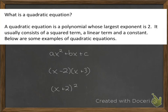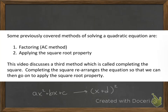Below are some examples of quadratic equations. Notice that this is a quadratic equation in factored form, and this is a quadratic equation also in factored form. However, you'd have to expand it. You could write it as x plus 2 times the quantity x plus 2, and then multiply it from there. Some previously covered methods of solving quadratic equations are factoring using the AC method and applying the square root property. This video discusses a third method, which is called completing the square.